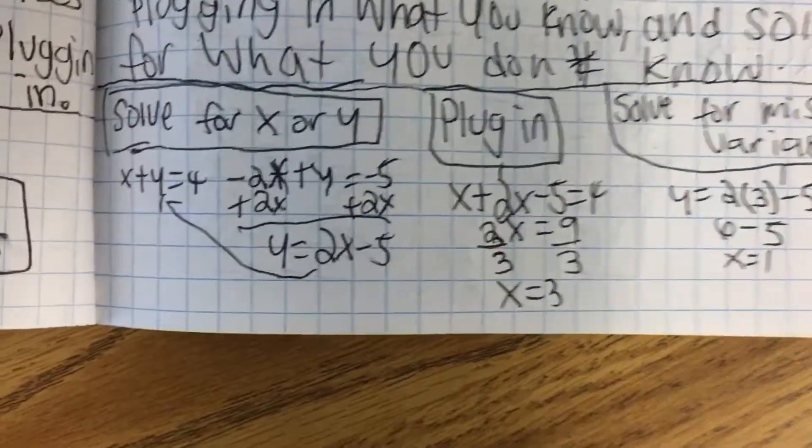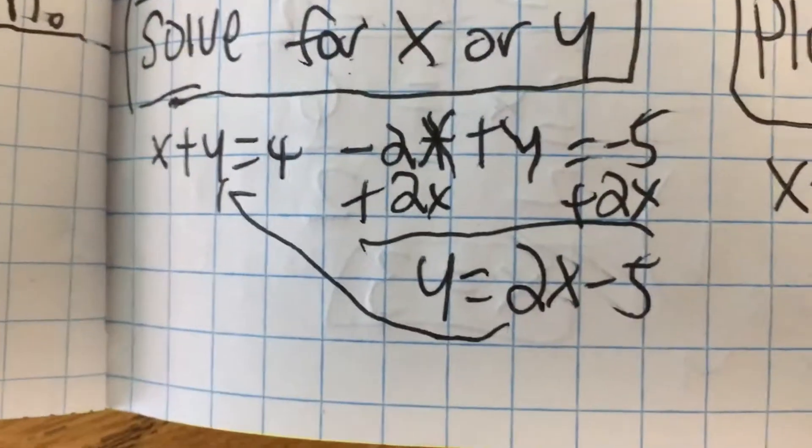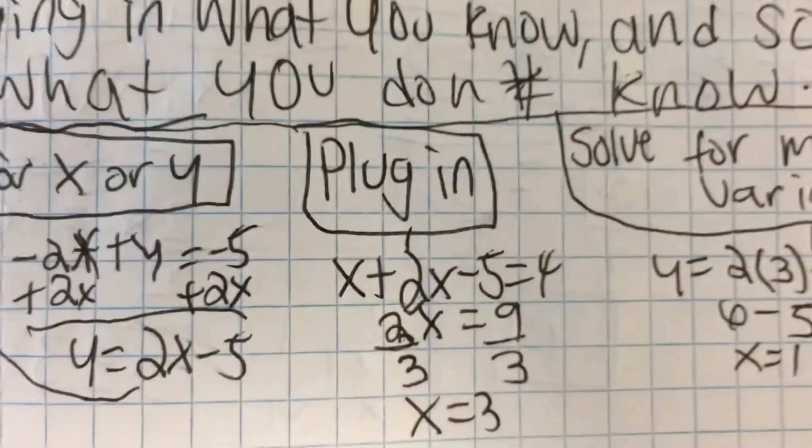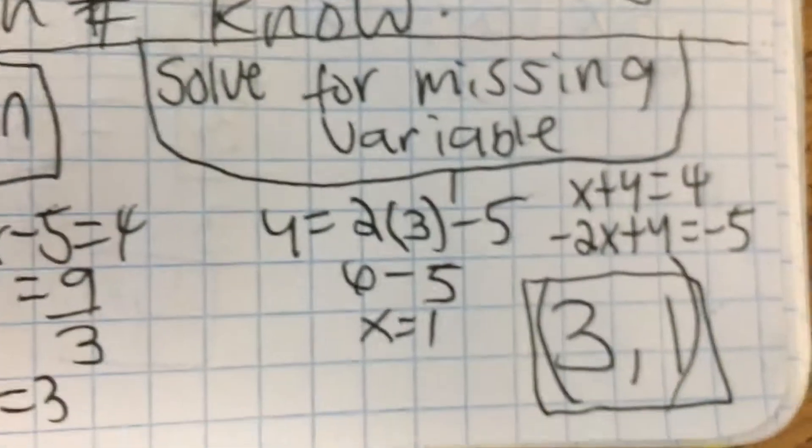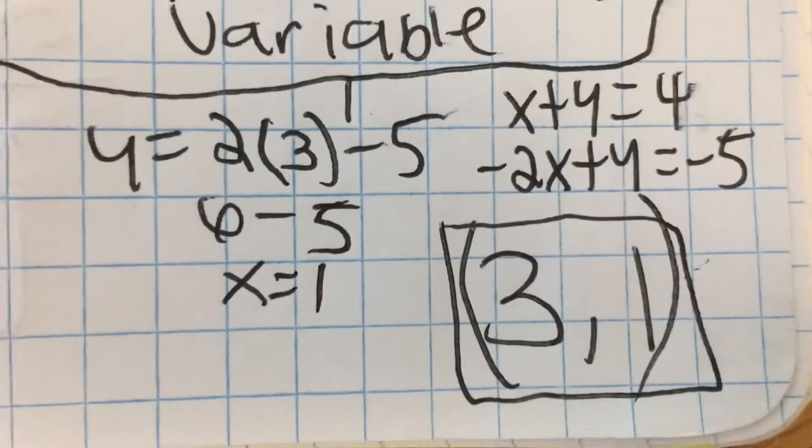And then picture, solve for x or y, and I do the little thing right there. Plug it in. Solve for missing variable. That's it.